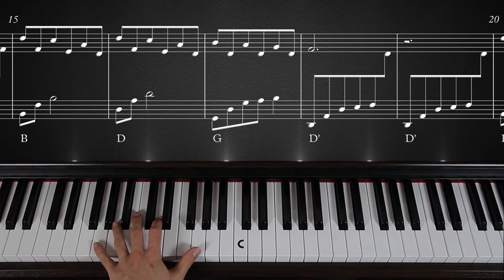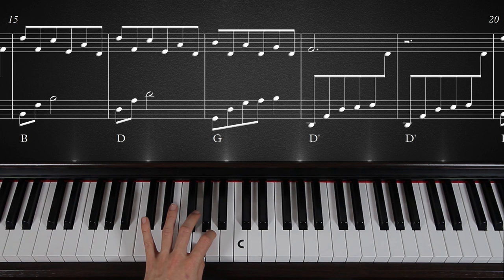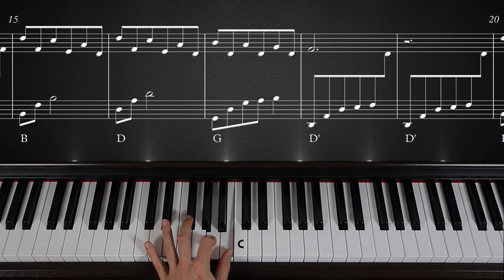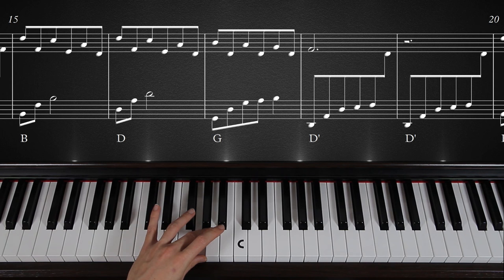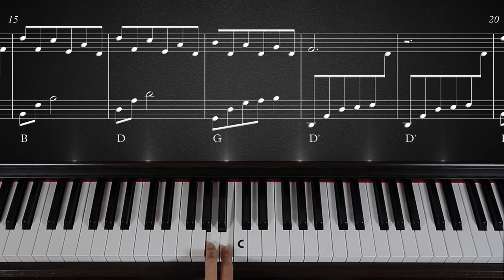Now you can play this G chord by lifting your finger over your thumb and then playing A with your index finger and B with your thumb, or you can lift your middle finger above your thumb.